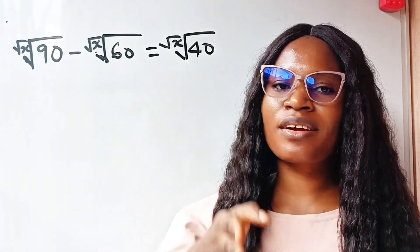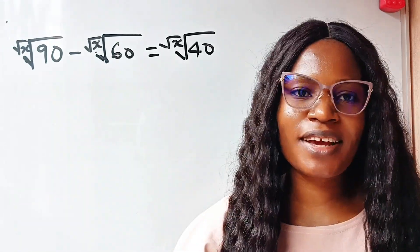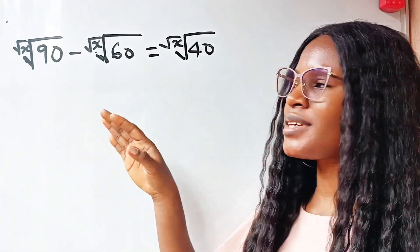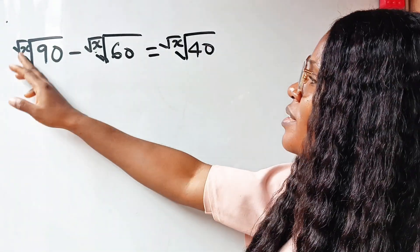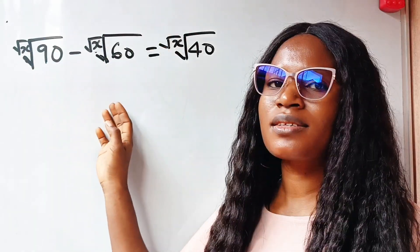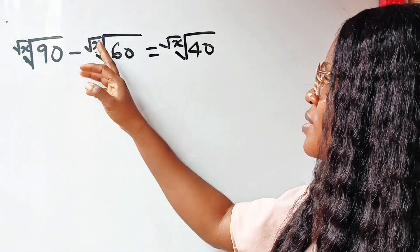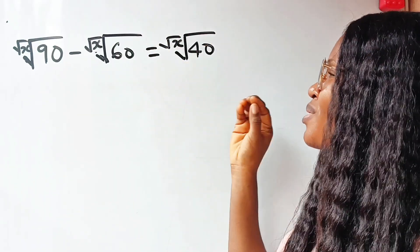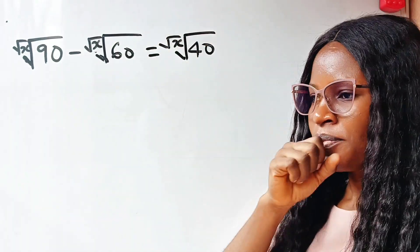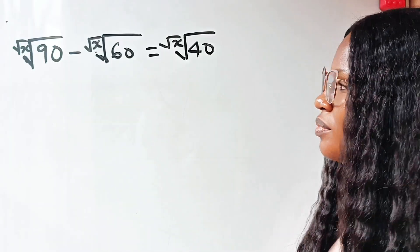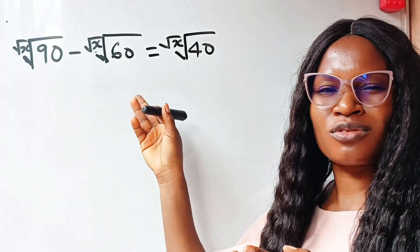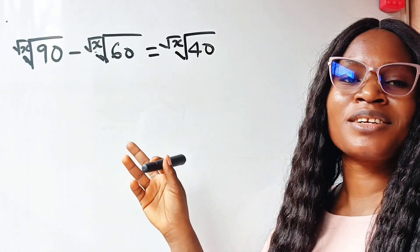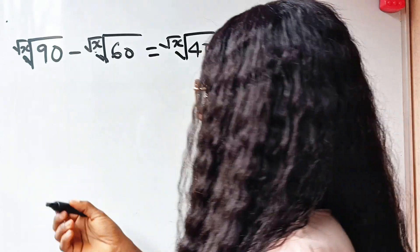This question is very interesting and lovely. Welcome back to my channel, let's solve this. The question says the square root of x, root of 90 minus square root of x, root of 60 equals square root of x, root of 40. We are going to first try to make this look reasonable, because it's actually looking awkward.